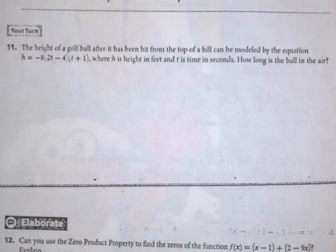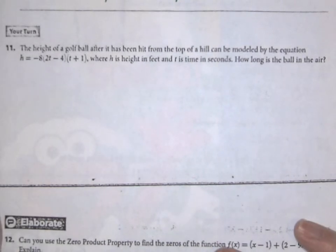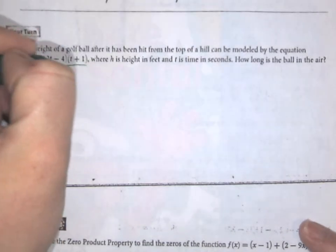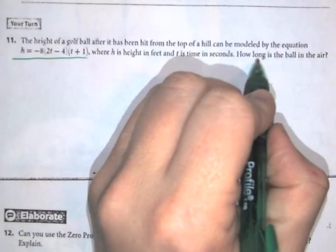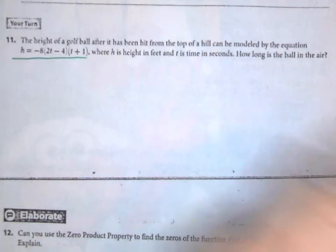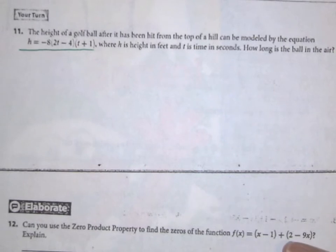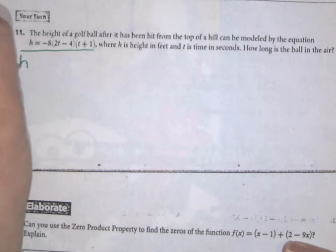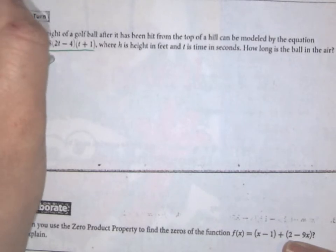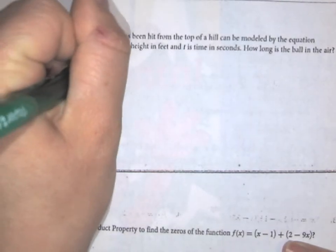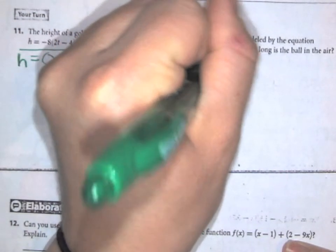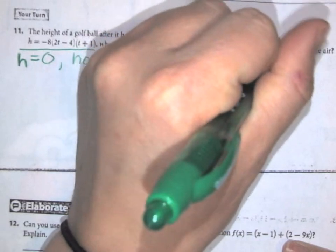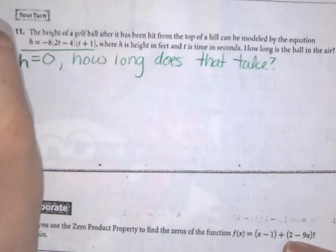Again, we have to think about what are these values. We know that this is our function. We also know that we want to know how long is it in the air. So really, what they're also asking is how long does it take to reach the ground. We want to know the time it takes for h to be zero, so we set our equation equal to zero.